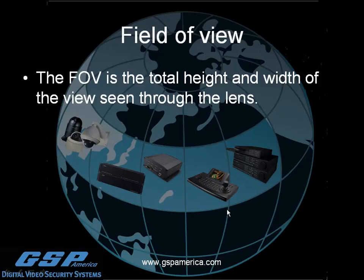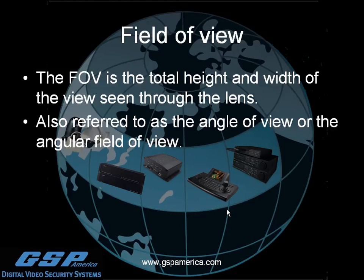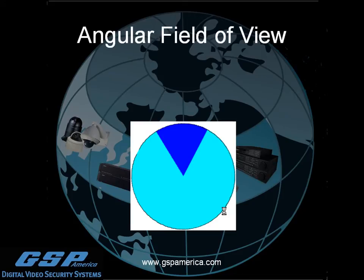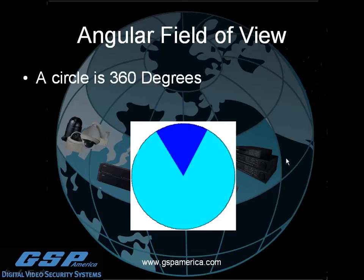What is Field of View? The FOV is the total height and width of the view seen through the lens. It's also referred to as the Angle of View or the Angular Field of View. The Angular Field of View is stated in horizontal and vertical degrees — specifically the arc of a circle and the angle created from that view, which is why it's referred to as an angle.